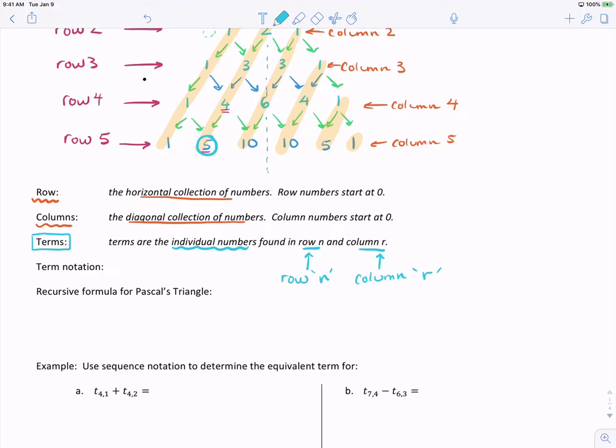Our term notation, when we talk about this, is a bit different for today. Term notation indicates not just the term, but the row and the numbers. So this is term N, R. Where N and R are subscript. Where N is our row number, and R is that column number.